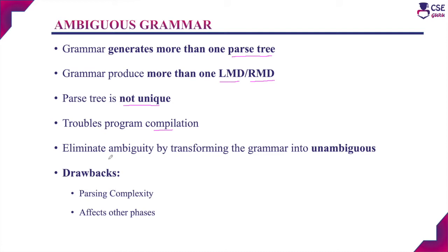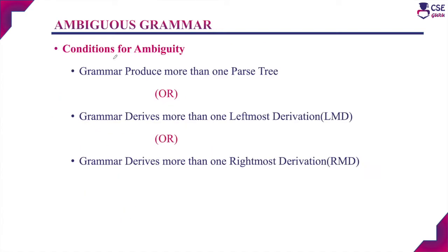If the grammar is ambiguous, we need to eliminate the ambiguity by transforming the grammar into an unambiguous one. The two main drawbacks of ambiguous grammar are that it will create parsing complexity and also affect the other phases of the compiler.